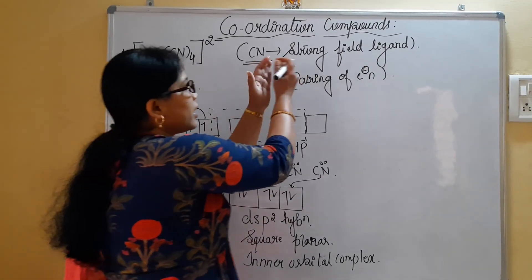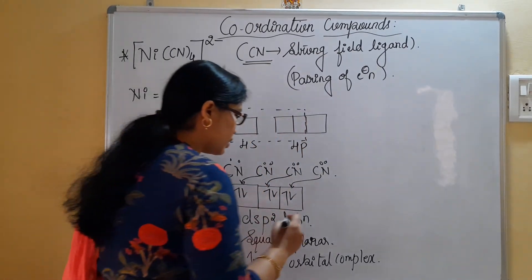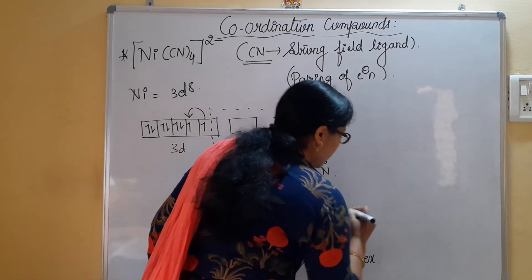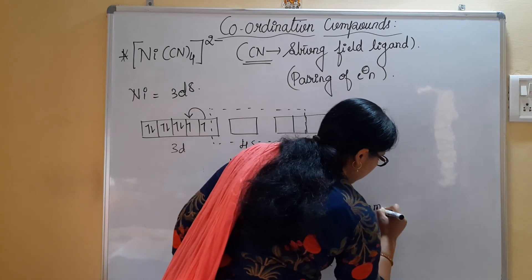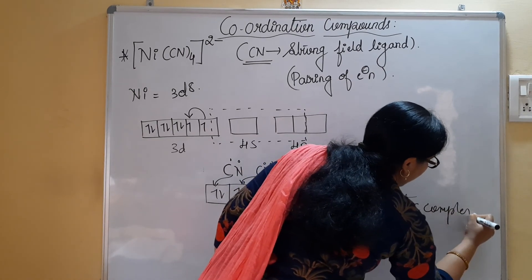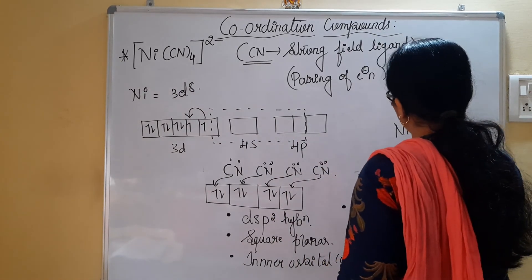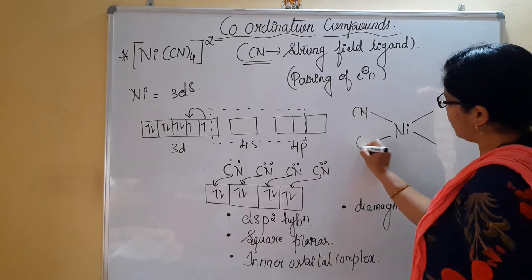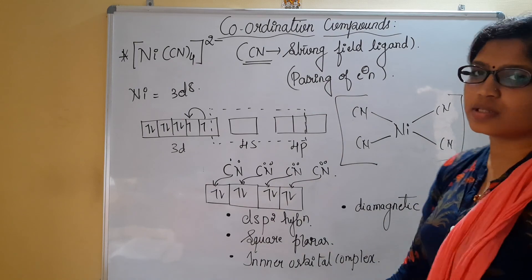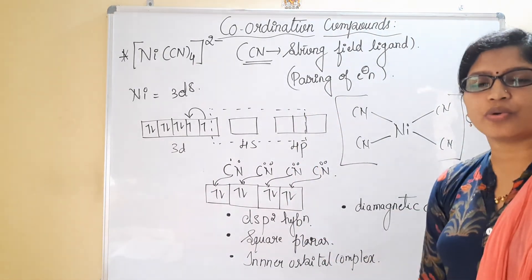Regarding the magnetic property: since pairing of electrons has occurred, this is a diamagnetic complex. To summarize for Ni(CN)4²⁻: the hybridization is dsp², the geometry is square planar, it is an inner orbital complex, and it is diamagnetic. You need to write these four points to get all three marks for this question. The structure shows Ni at the center with four CN groups arranged in a square planar configuration.